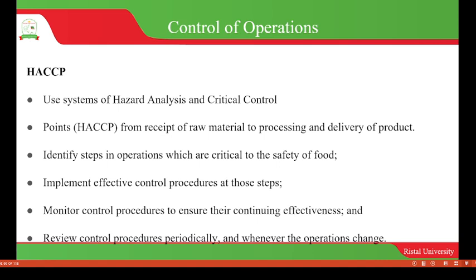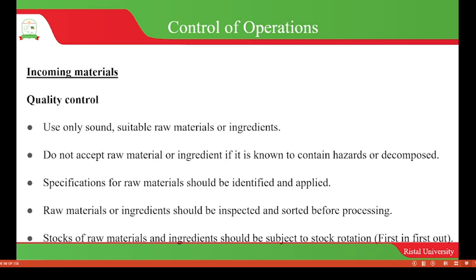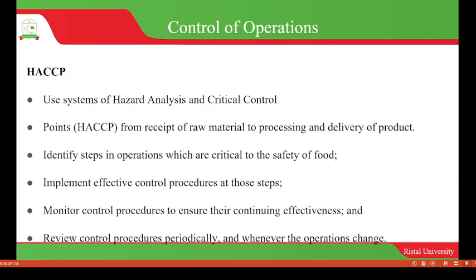This system is very important because its main role is to identify food hazards and control them before they occur in food production. Starting from the reception of raw materials, we have to ensure that we always use the HACCP system so that if hazards are present, they will be identified and controlled before completion of the food processing.